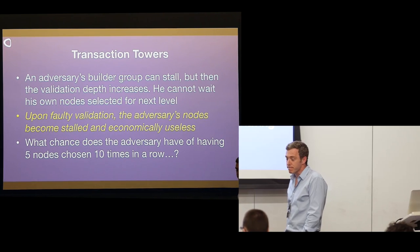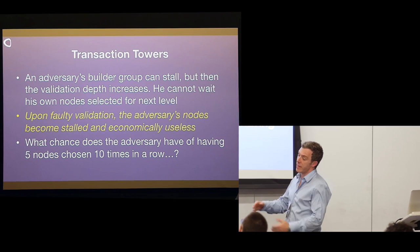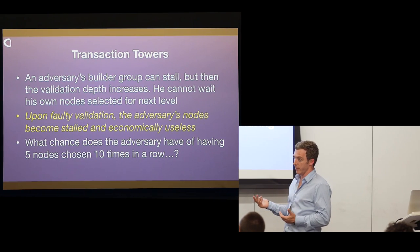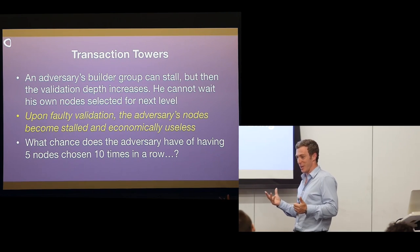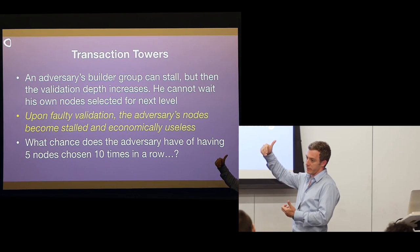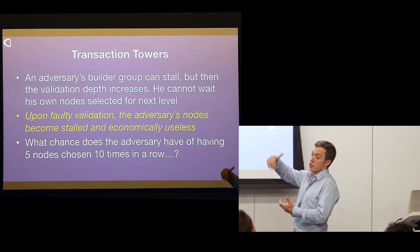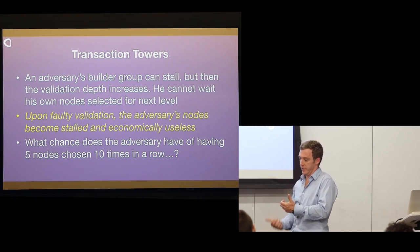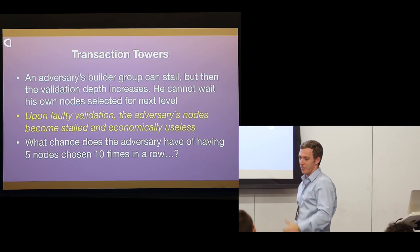An audience member asks what happens if some nodes are not available to be part of the tower. In that case, you can't distinguish between not being available or refusing to participate. So the thing would stall — someone would have to build deeper. You would have to build a large number of levels on top, so something currently five levels deep would need an additional ten to become valid rather than five.